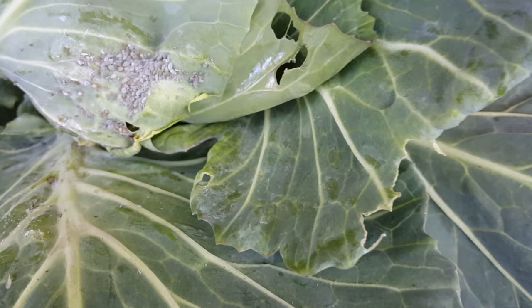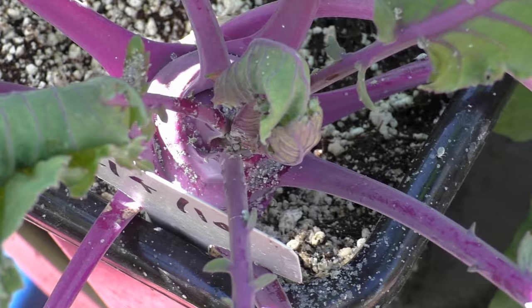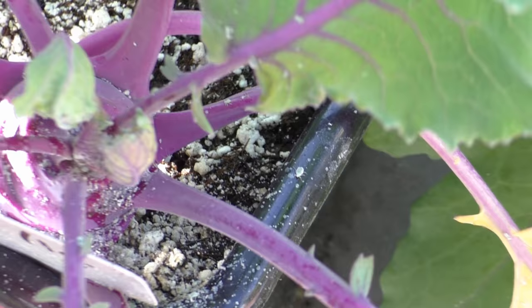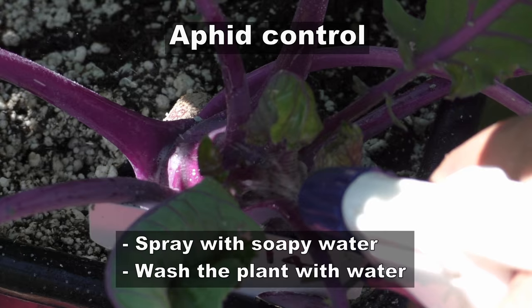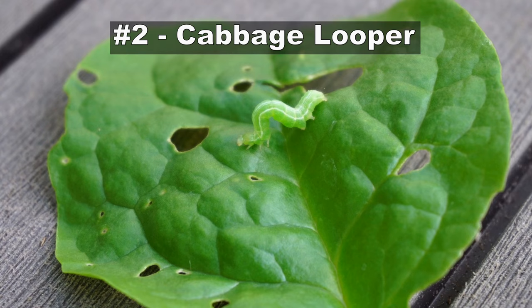Aphids are soft-bodied insects that are found on many plants. You can see here they're found in cabbage in a gray color, and this is a kohlrabi plant that has the same gray aphid infestation. This can be very damaging to your plants. To control aphids, just spray with soapy water and they should be gone — rinse the plant after you're done.